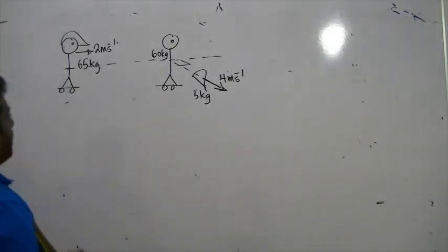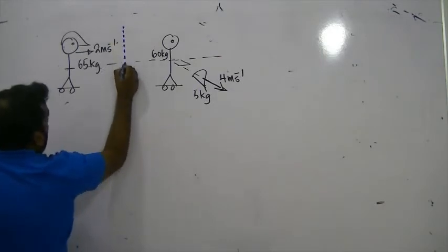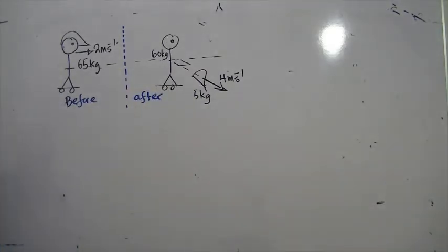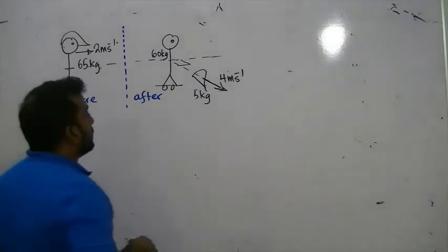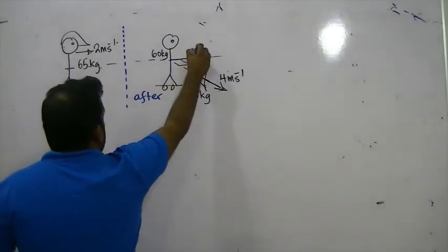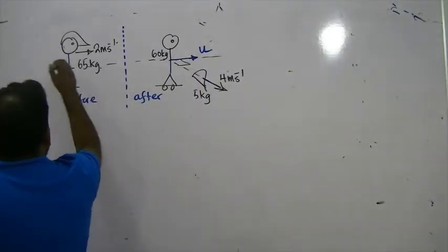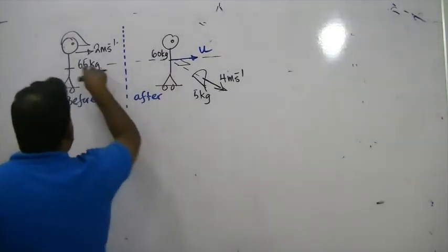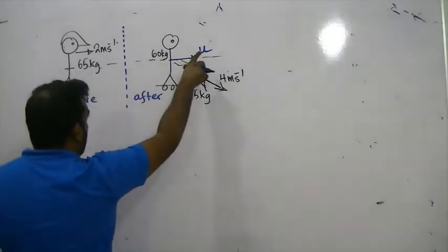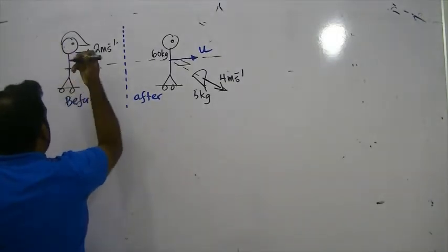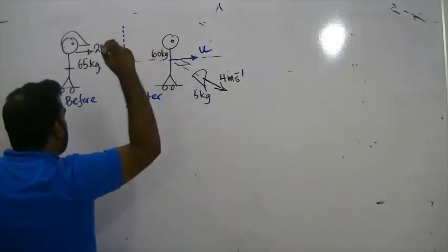Look at the diagram carefully. Before and after the throw, the law of conservation of linear momentum can be applied because they are throwing something — the forces cancel within the system. Initial momentum in the forward direction exists, so final momentum must also be there. Initial momentum in the perpendicular direction is zero, so final perpendicular momentum must also be zero.